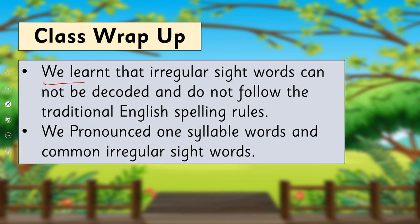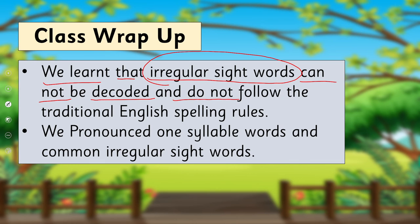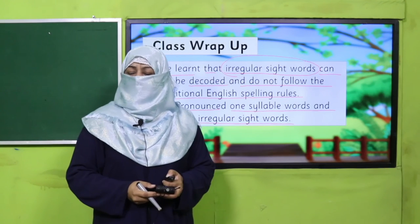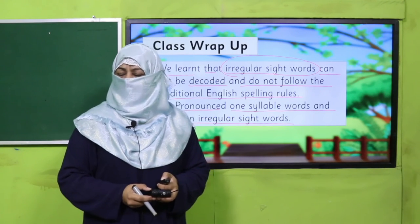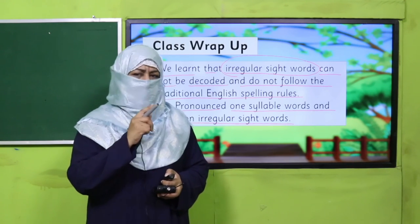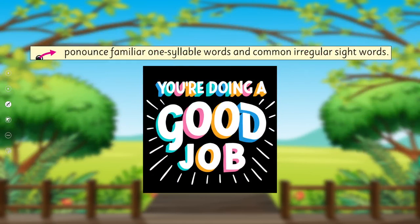So what have we learned today? We learned that irregular sight words cannot be decoded and do not follow traditional English spelling rules, and we practiced pronouncing one-syllable words and common irregular sight words. That's it for today! Tomorrow I'll come again with a very interesting lesson. Till then, keep learning and take very good care of yourself. Thank you!